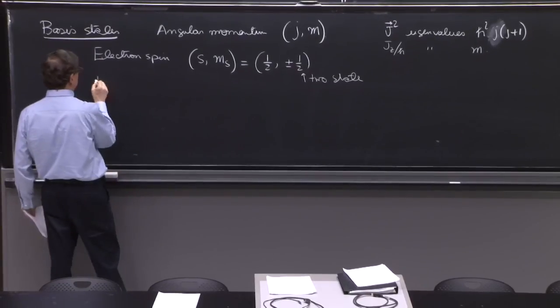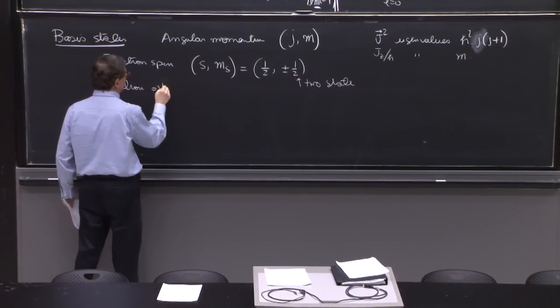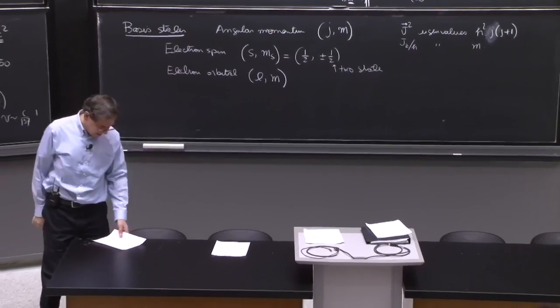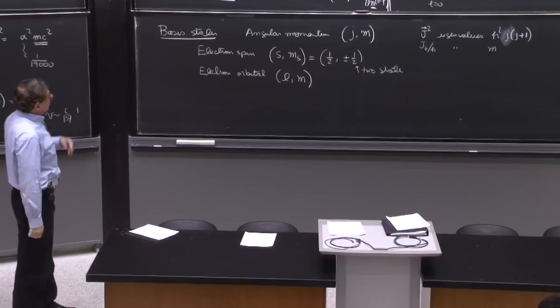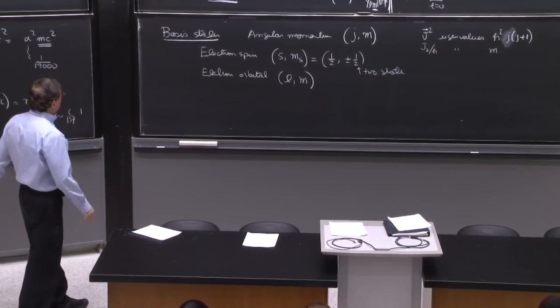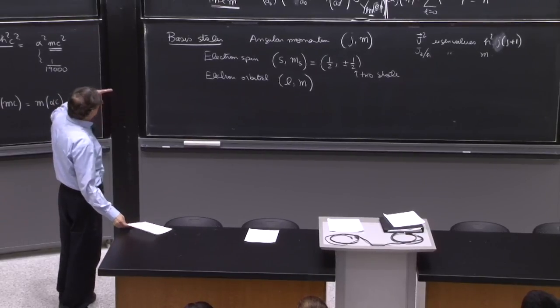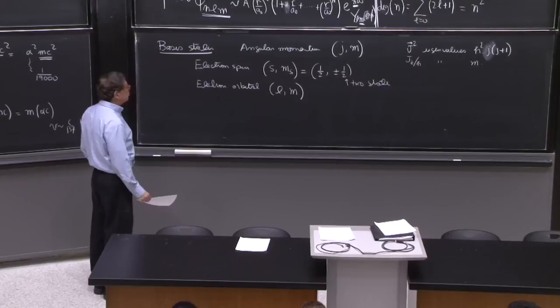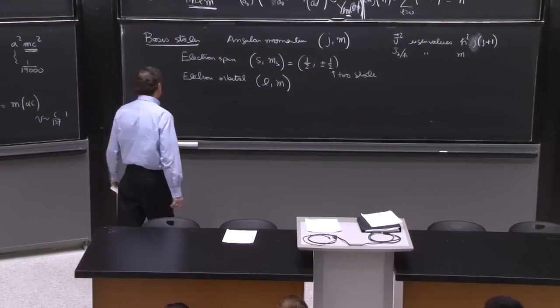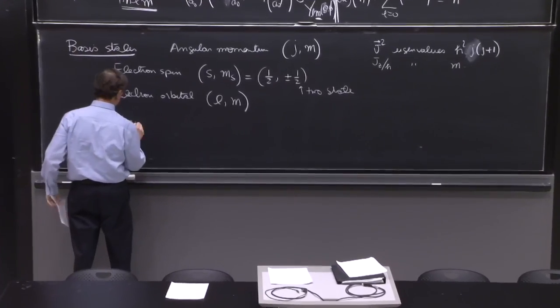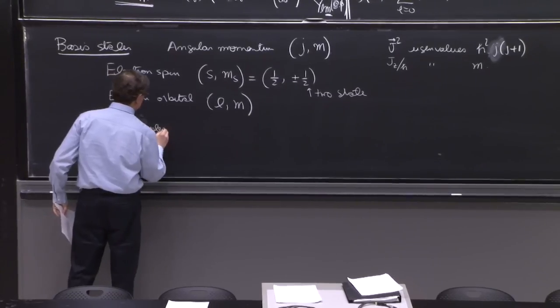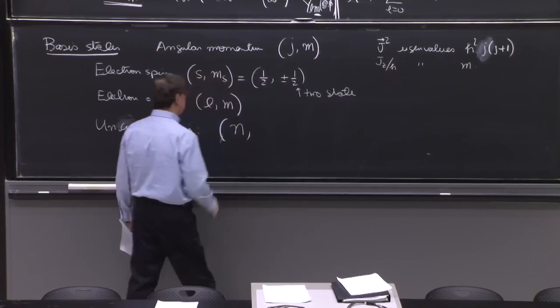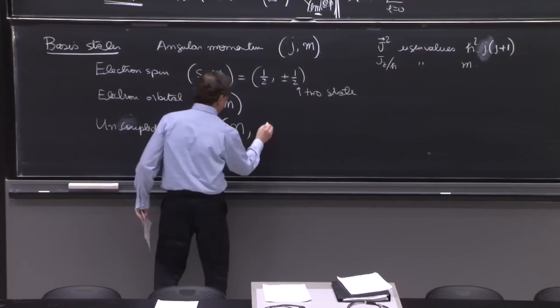For electron orbital, we have l and m. Those are the names, l and m is the quantum number. So how do we define the uncoupled basis? The uncoupled basis is a set of states that enumerates the whole spectrum of the hydrogen atom using those quantum numbers to distinguish all those states. So the uncoupled basis are those states that we had there, uncoupled basis, are all these states. And they're described by n, the principal quantum number, l and m.